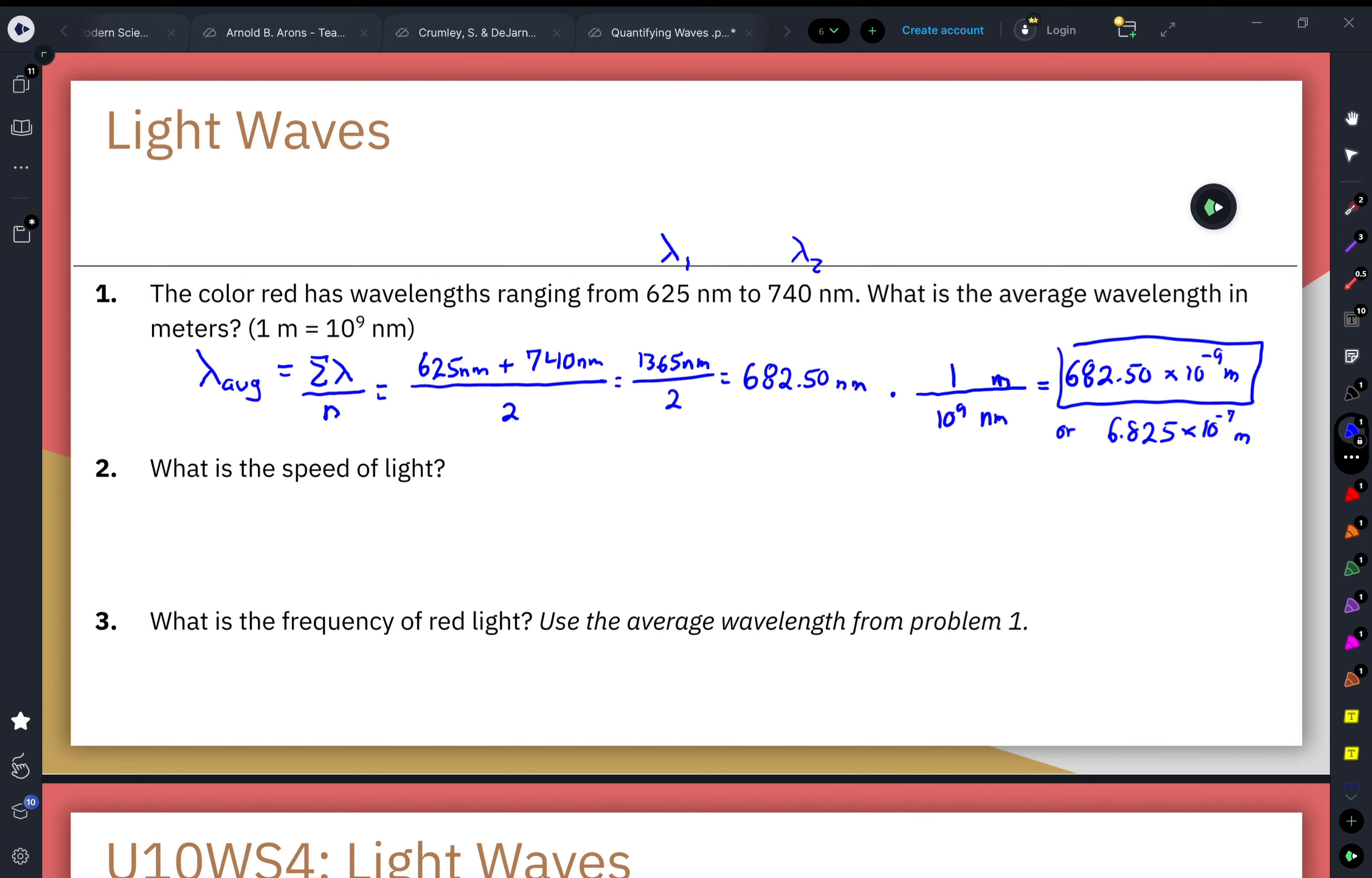I do prefer the top way just because the wavelength of light is going to range from like 350 to 800 nanometers, so it's just an easier conversion. Mathematically they're equivalent and I would accept either way, but you'll just typically see me going with the top way.